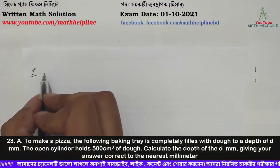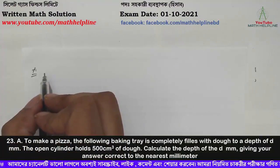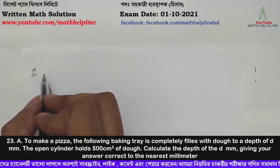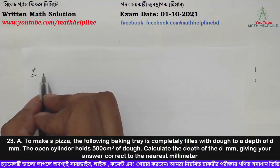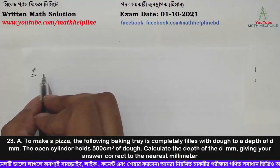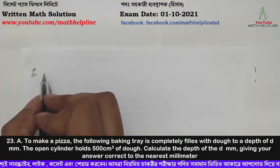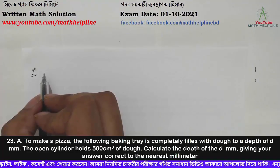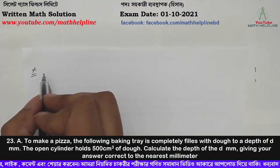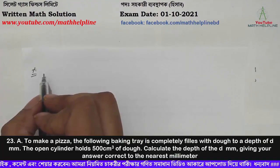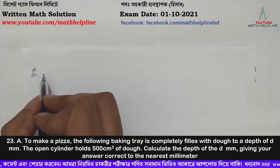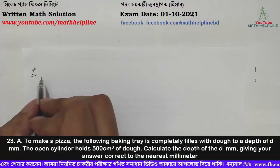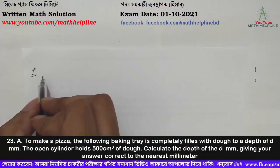To make a pizza, the following baking tray is completely filled with dough to a depth of d mm. The open cylinder holds 500 cm³ of dough. Calculate the depth of the dough, d mm.